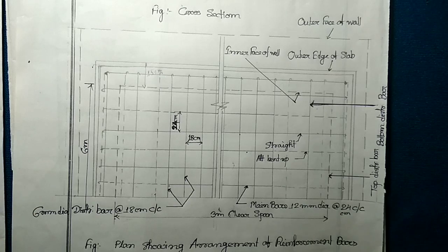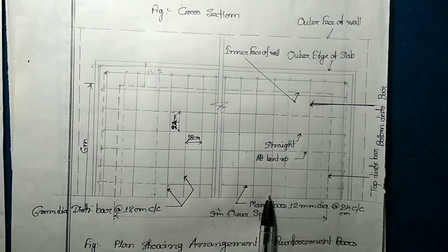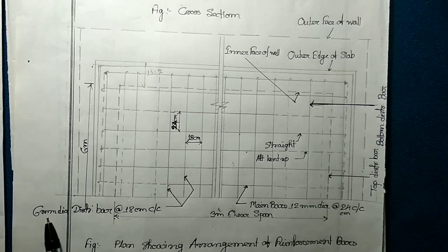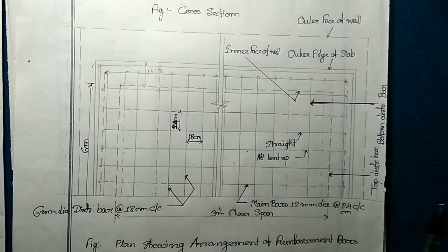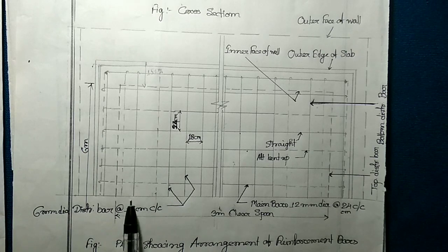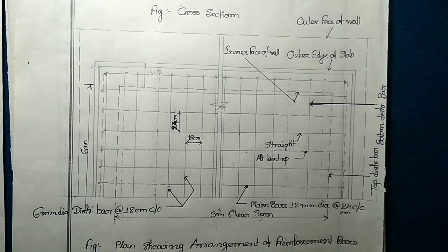In the middle portion we place the distribution bar at the bottom, that's why the lines are solid. But in the extreme left and right you can see the bars in dotted form, which means those distribution bars are placed at the top. Before going to do the estimate, try to visualize the drawing first — it will be very easy for you to do the estimating part.